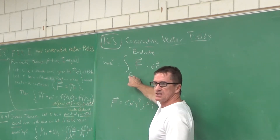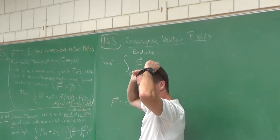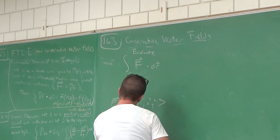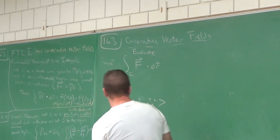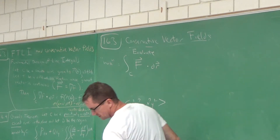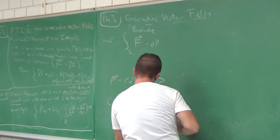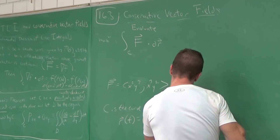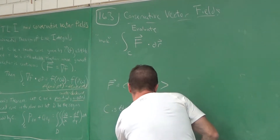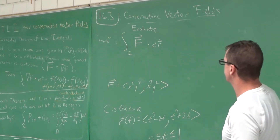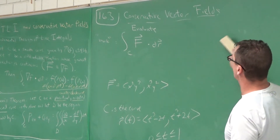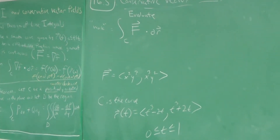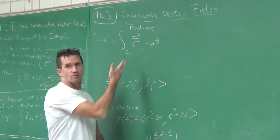What's the curve? The c represents the curve. The curve is r of t equals t cubed minus 2t, comma 2t squared plus t, going from t equals 0 to some endpoint. There's the curve, there's the vector field — we have to evaluate this line integral.